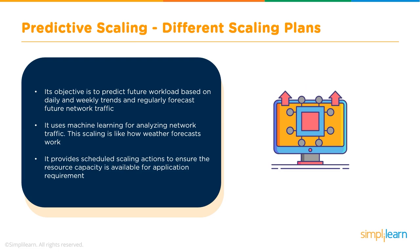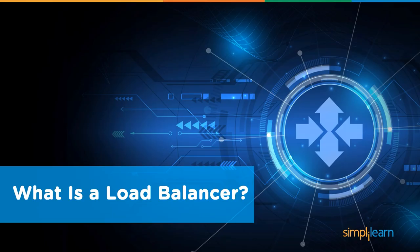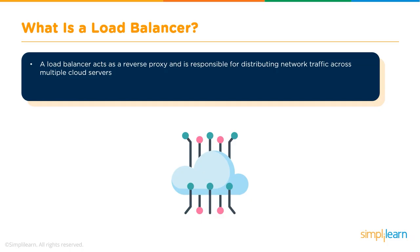Predictive scaling provides scheduled scaling actions to ensure resource capacity is available for application requirements. With autoscaling creating multiple instances, a load balancer is also needed to distribute load across those instances. A load balancer acts as a reverse proxy, distributing network or application traffic across multiple servers.